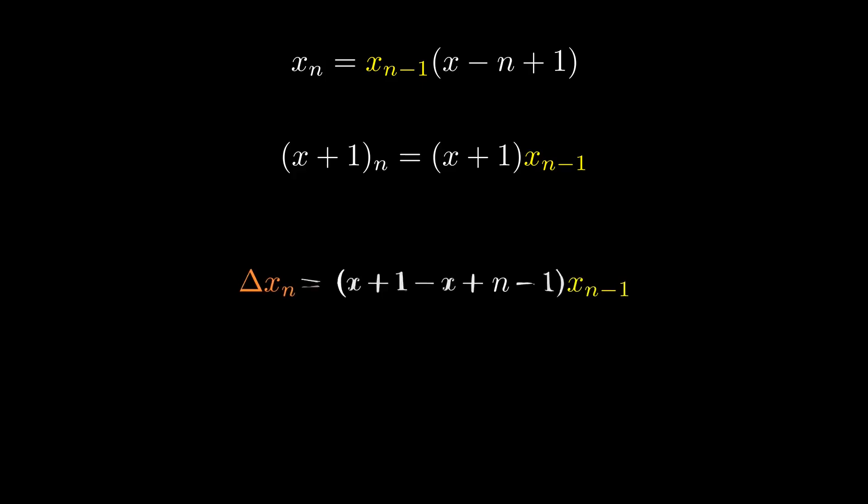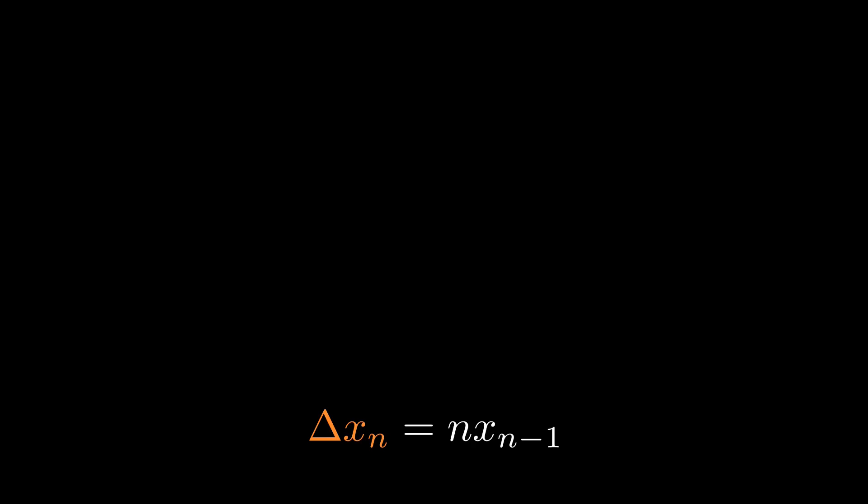Combine like terms, and this simplifies down to n times x to the falling n minus 1, which definitely looks familiar, right? In fact, it turns out this déjà vu is exactly the motivation we need to create our umbral transformation.